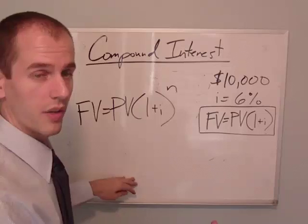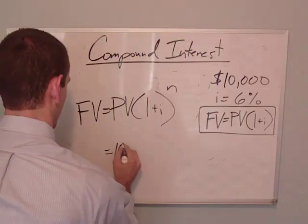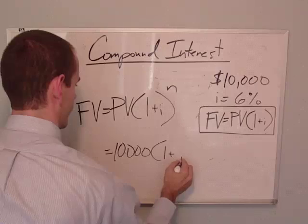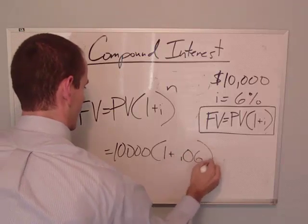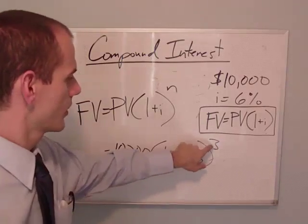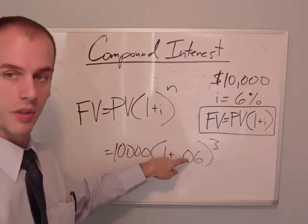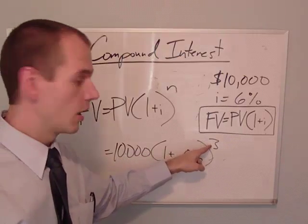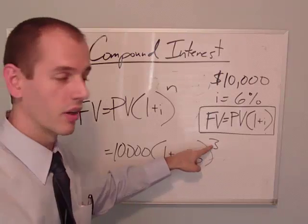So now, if I was to rewrite our equation, so I'm taking this 1 plus 0.06 to the third power, because this is our number of periods.